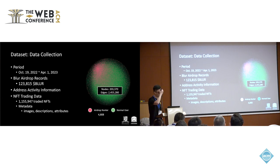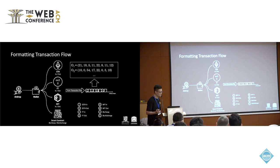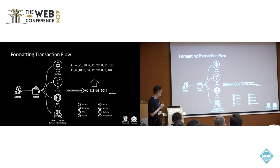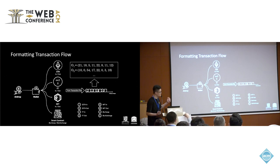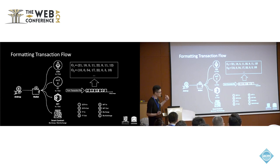We have more than 1 million NFT trading records, and also metadata because these NFTs have images, descriptions, and all their attributes. In order to construct a graph, we formulate all the transaction flows. For each address, you might have different activities connected to ETH, NFTs, or smart contracts like Blur. We formulate their interactions — in, out, Blur swap, or Blur exchange — as eight actions, and create a sequence for those eight action types with an accumulated count of interactions. For different addresses, we get their corresponding activity profiles.